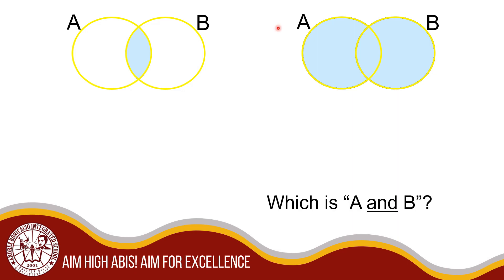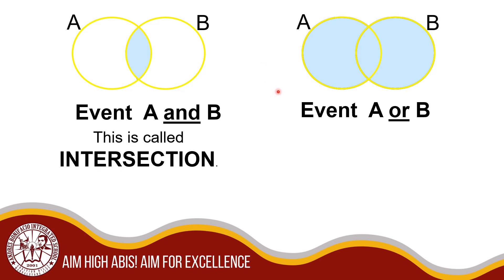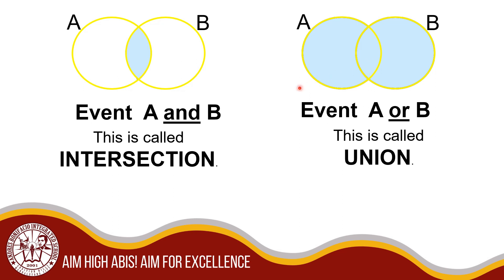Which is A and B, and which is A or B? Event A and B refers to the intersection, and event A or B refers to the union. The word union means uniting, or 'pinagsama' in Tagalog. The union of events A and B is the event that either A or B, or both, occurs. It is denoted A union B, or simply A or B. The intersection of events A and B is the event that both A and B occur.